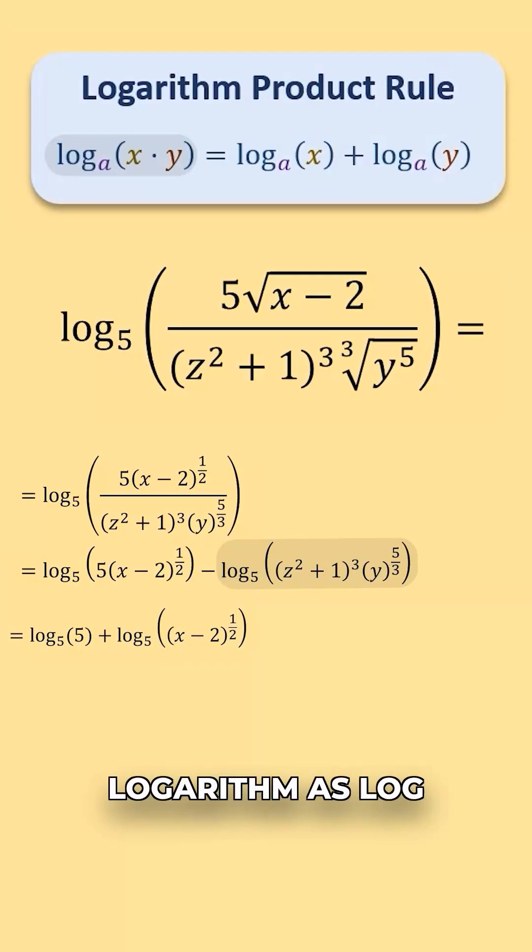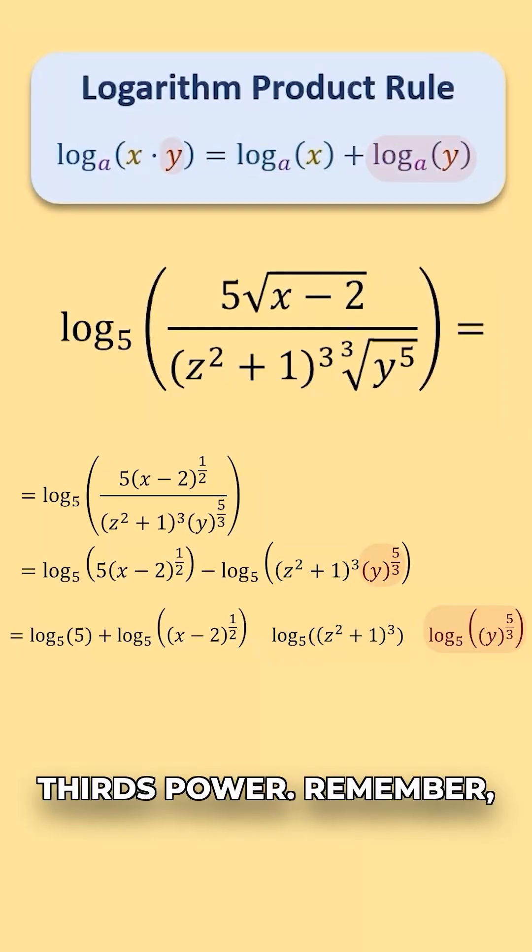We can also rewrite our second logarithm as log base 5 of the quantity z squared plus 1 all raised to the third power plus log base 5 of y to the 5 thirds power. Remember we have a minus out front, so we can distribute that in front of both of these logarithms.